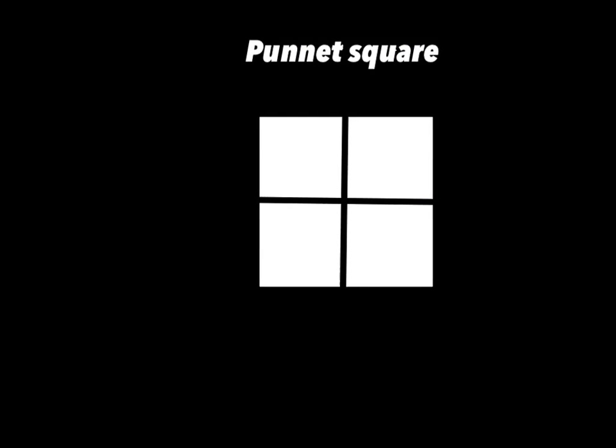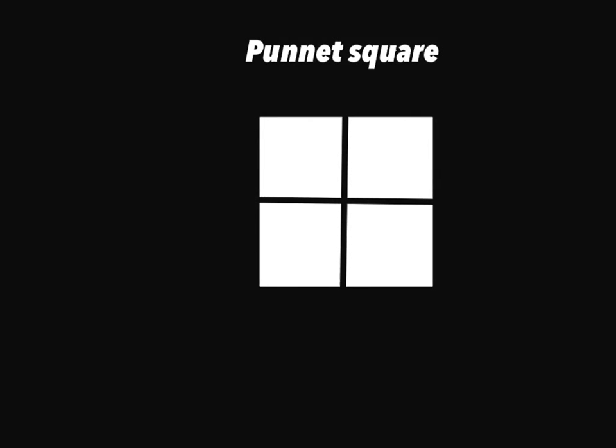The next section here is the actual Punnett square. Punnett squares are used to predict the genotypes and phenotypes of the offspring, and you use the parent's genotypes to figure this out. It is usually a window box like this — it can be two by two or it can be a lot larger depending on how many traits you are crossing.